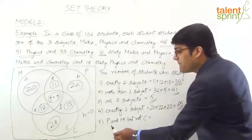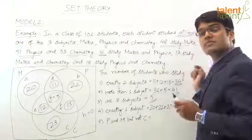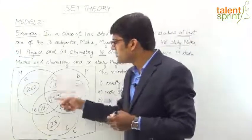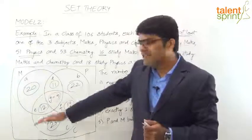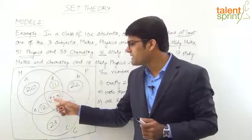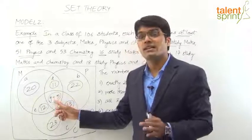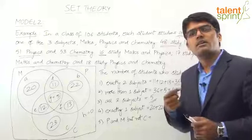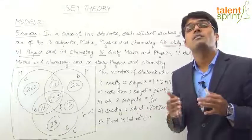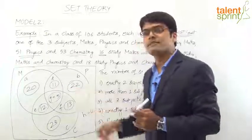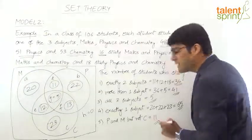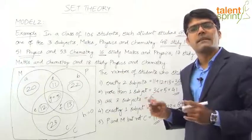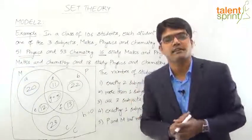Fifth question: the number of students who study Physics and Maths but not Chemistry. Physics and Maths covers regions D and G, but since we exclude Chemistry we ignore G. So the answer is only region D = 11.